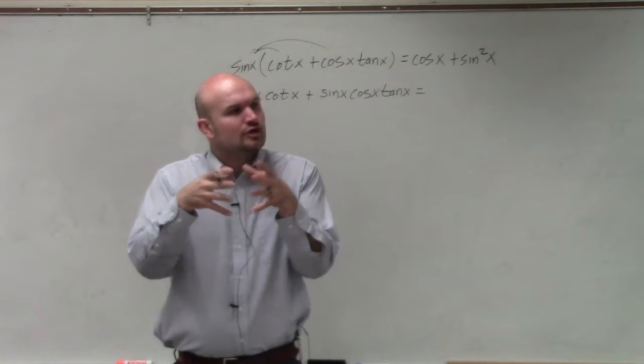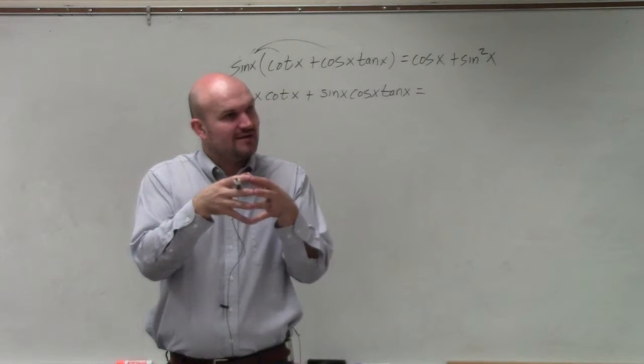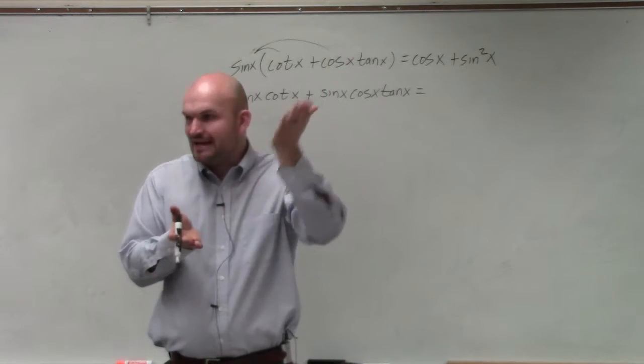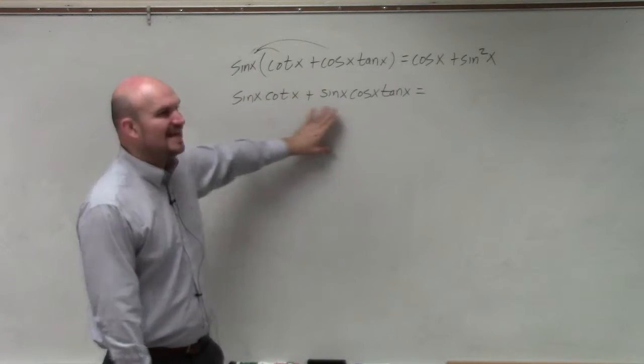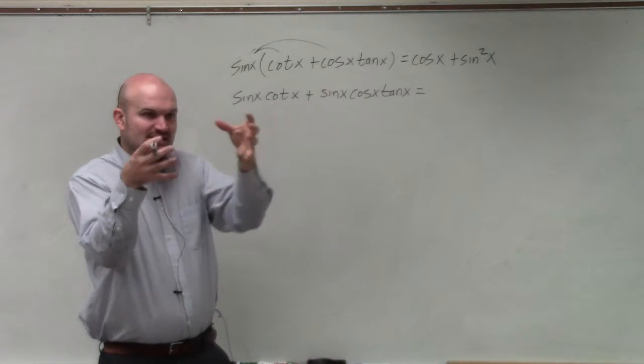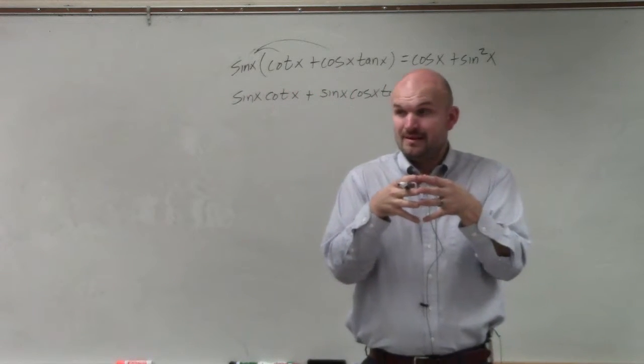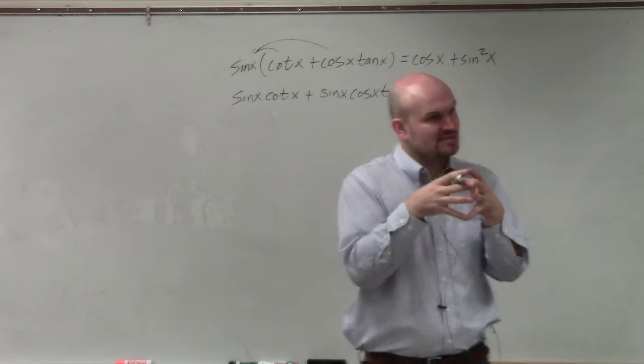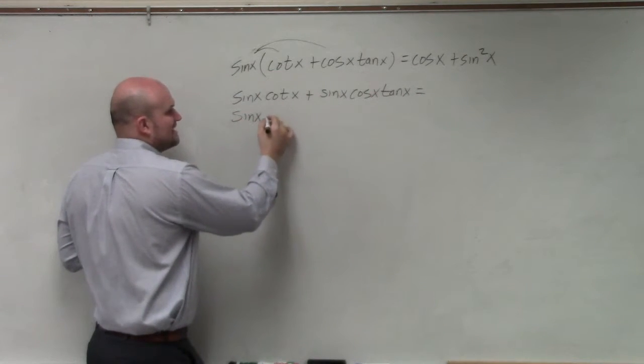When you're using your identities, group your identities together. You want to have your functions where they can be divided out, right? Because we're trying to simplify. We don't want to use random identities. The best grouping if you're unsure is sines and cosines. So I'm just going to rewrite everything in terms of sines and cosines.